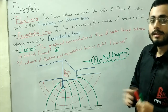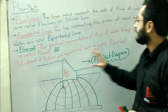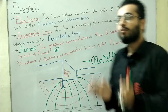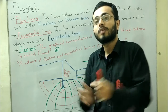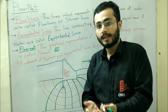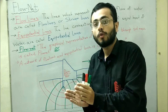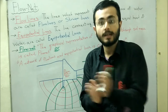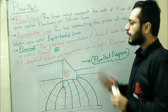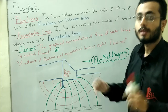A network of flow lines and equipotential lines is called flow net. So basically flow lines and equipotential lines combined result in the flow net diagram. Flow net diagram is a combination of flow lines and equipotential lines — these are the key terminologies.